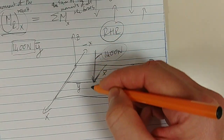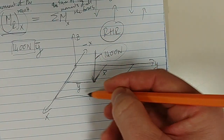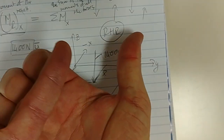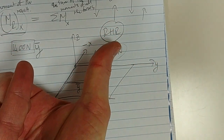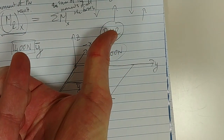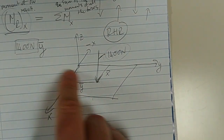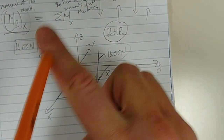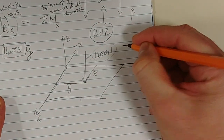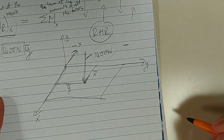So I put my fingers down in the direction of the force and curl them around. What is the direction of my thumb? It's negative X. So this force is causing a clockwise motion about the X axis. Your fingers are curling around the X axis in a clockwise way. Clockwise means it's negative. Your thumb is going in the negative X direction, which also tells you the direction of the moment — that is a negative moment. That's why it says minus 1400 times Y.